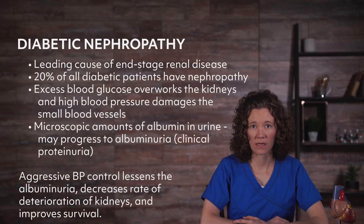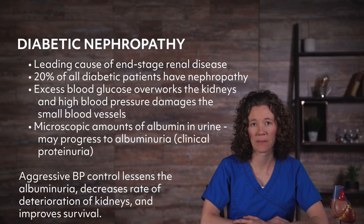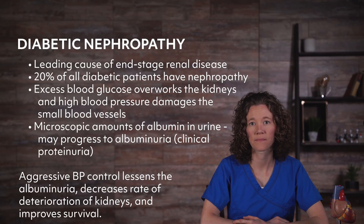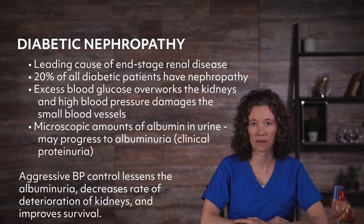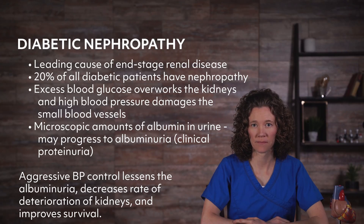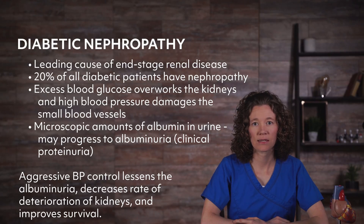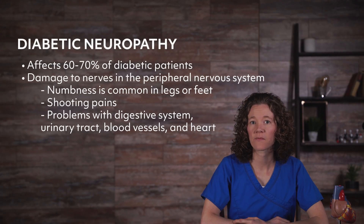Diabetic nephropathy is the leading cause of end-stage renal disease in the US, with 20% of all diabetic patients having nephropathy. Excess blood glucose overworks the kidneys and high blood pressure damages the small blood vessels. Microscopic amounts of albumin in the urine is the earliest lab abnormality, which may then progress to albuminuria or clinical proteinuria. Aggressive blood pressure control lessens the albuminuria, decreases the rate of deterioration of the kidneys, and improves survival.